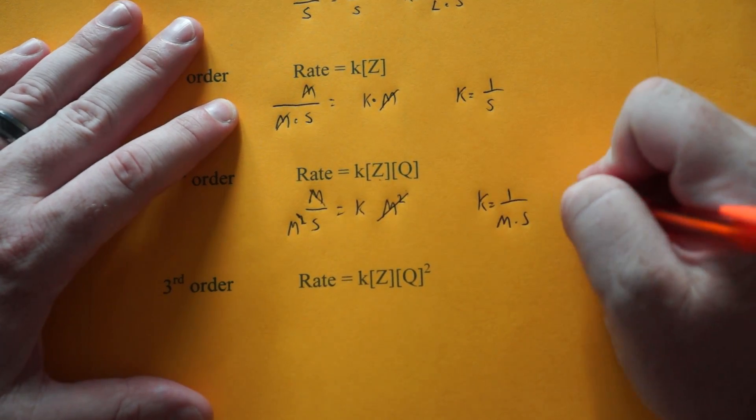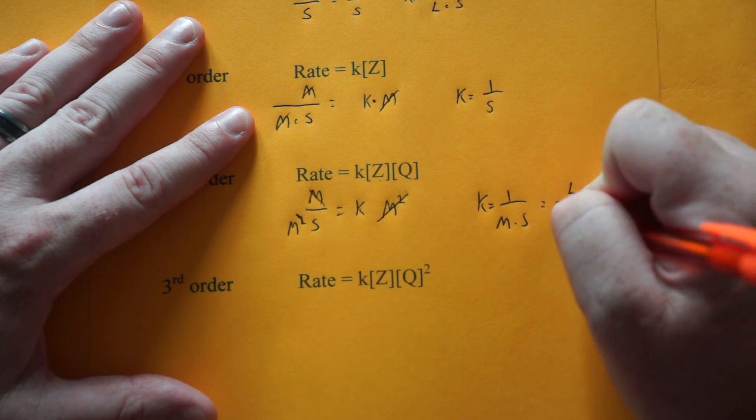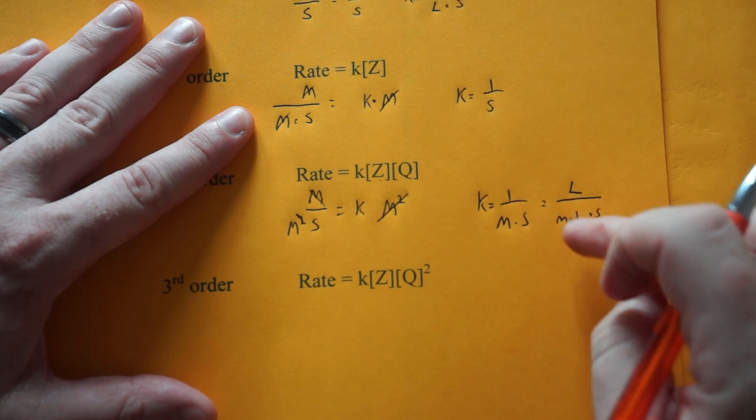If we're going to put moles and liters in there, it comes out to liters over mol seconds, because molarity is moles per liter.